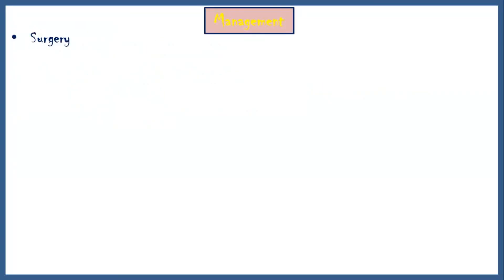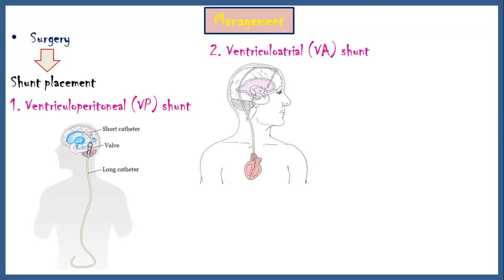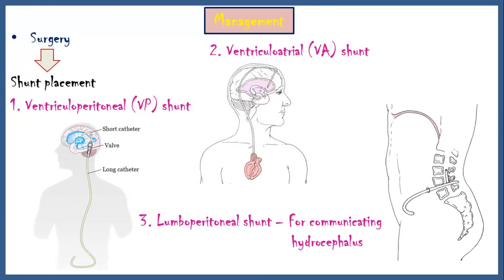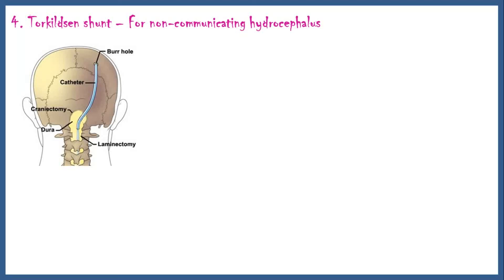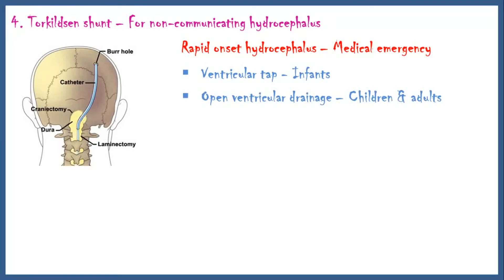Surgical treatment is the preferred therapeutic option in hydrocephalus. Most patients eventually undergo shunt placements. Ventriculo-peritoneal shunt drains excess CSF from the ventricles into the peritoneal cavity. Ventriculo-atrial shunt drains excess CSF from the ventricles into the right atrium. Lumboperitoneal shunt is used for communicating hydrocephalus, draining CSF from the lumbar subarachnoid space into the peritoneal cavity. Torkildsen shunt is used rarely and only for acquired non-communicating hydrocephalus, draining CSF from the lateral ventricles into the cisterna magna. Rapid-onset hydrocephalus is a medical emergency requiring immediate correction, with treatments including ventricular tapping in infants, open ventricular drainage in children and adults, and VP or VA shunt.